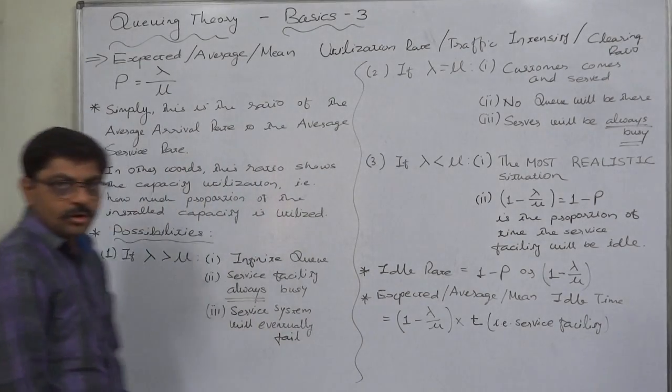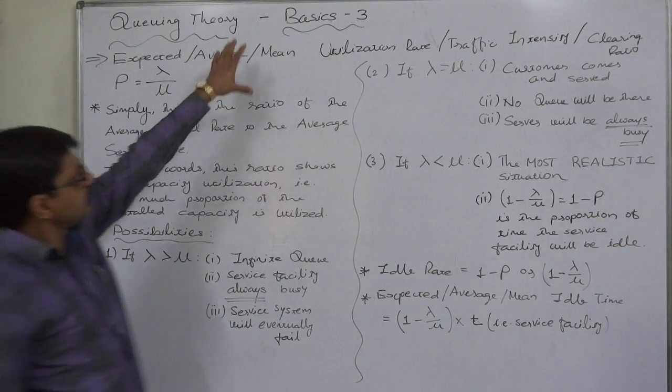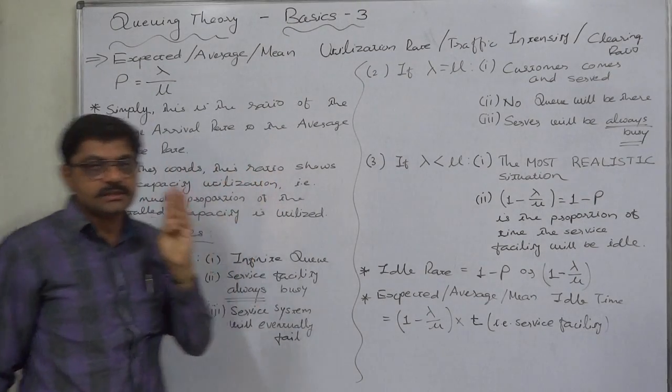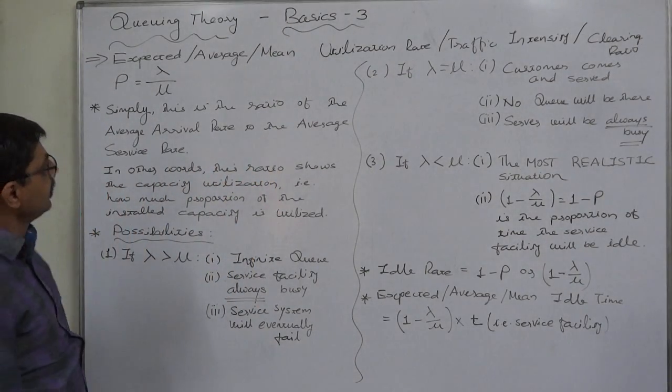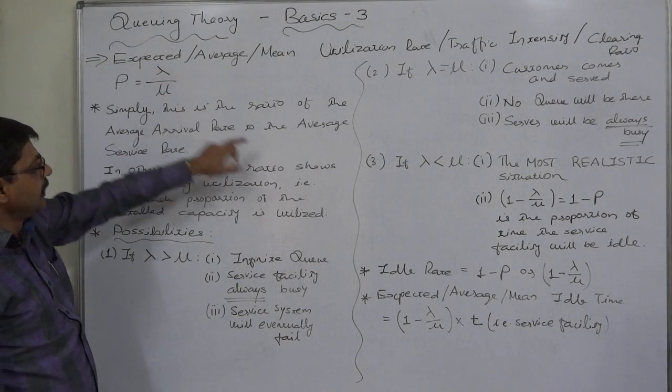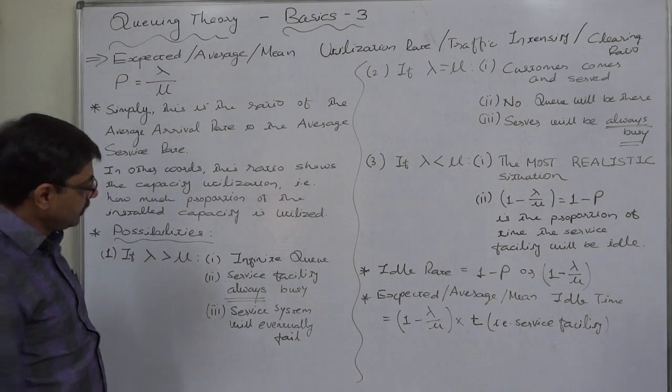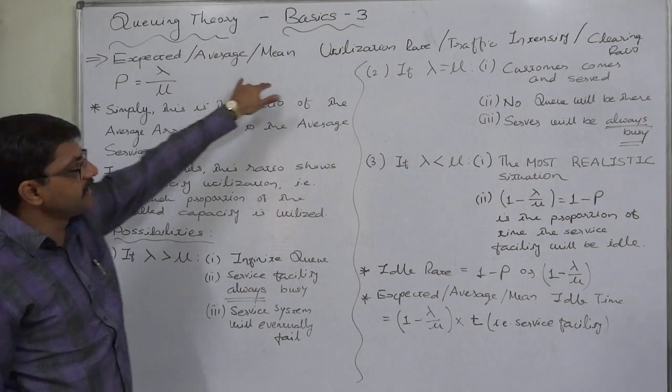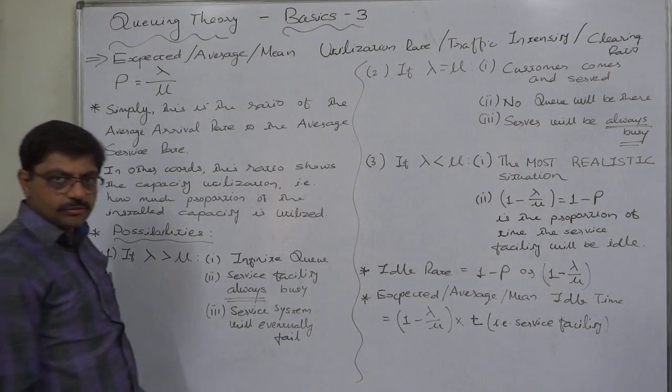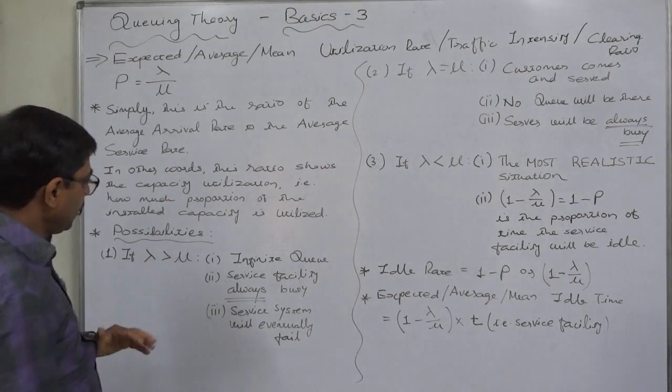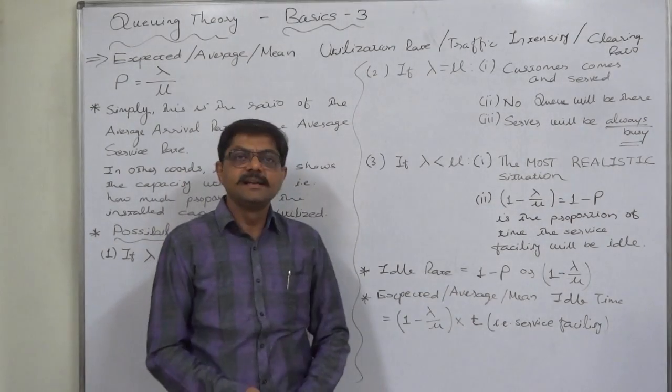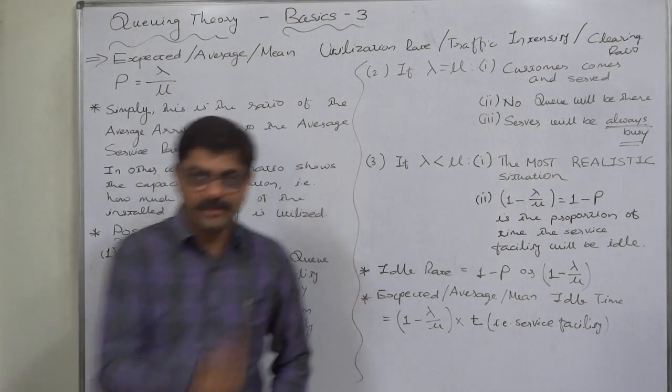So in three lectures relating to basics of queuing theory we discussed four major points. One was average arrival rate lambda. Another was average service rate mu. On the basis of these two, utilization rate or clearing ratio or traffic intensity or capacity utilization whatever we call it. Then idle rate and idle time. That's it. Thank you very much.